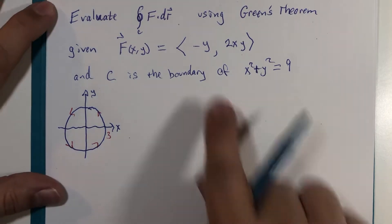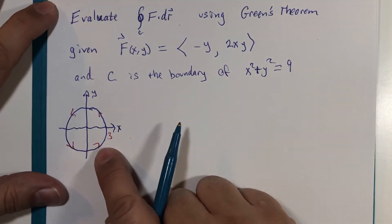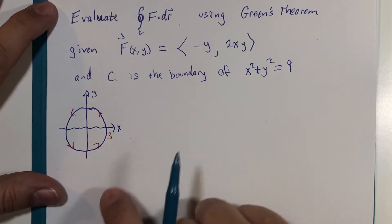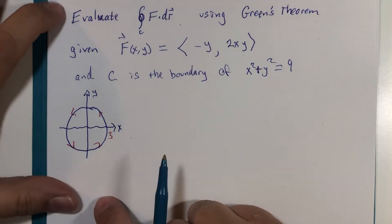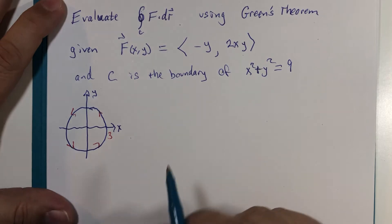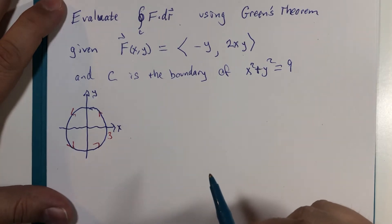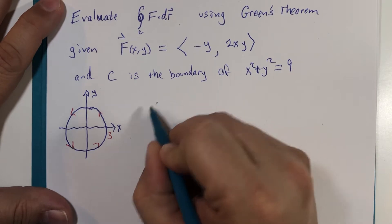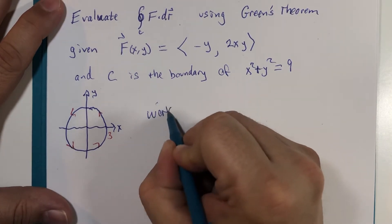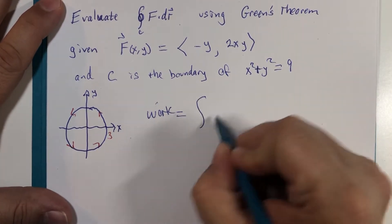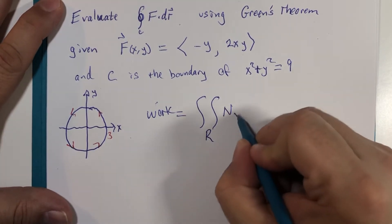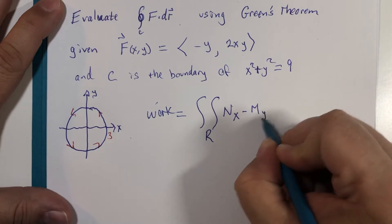If this is a conservative vector field, we expect the work done to be zero. But if it's not a conservative vector field, that's really where Green's Theorem shows itself. So according to Green's Theorem, that work calculation will be N with respect to x minus M with respect to y.